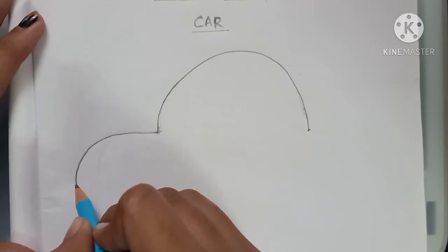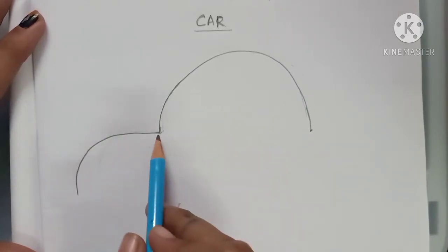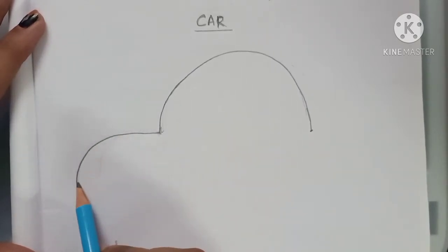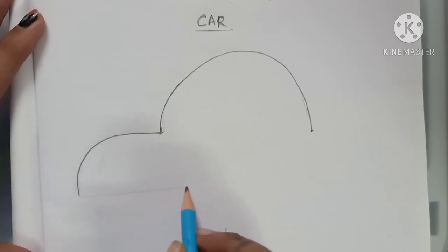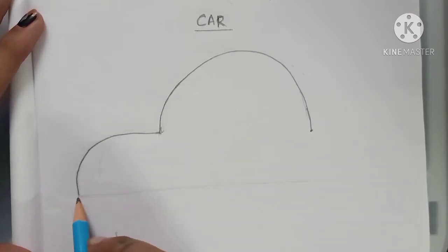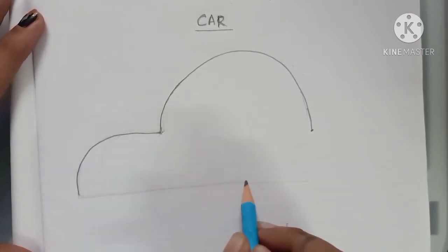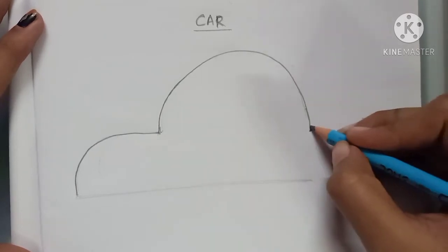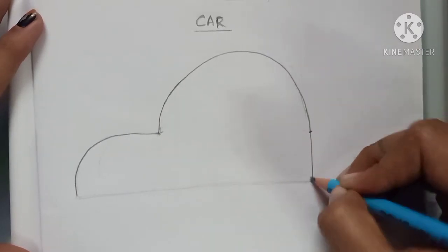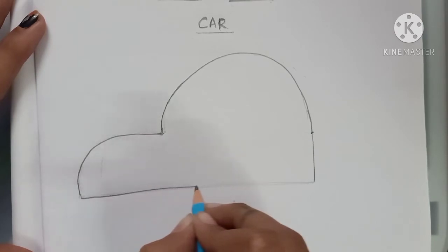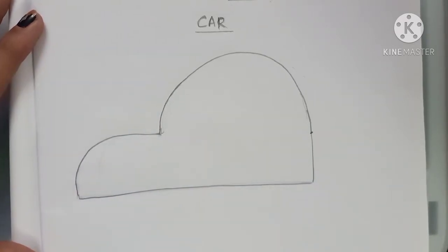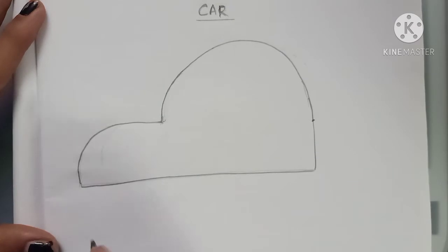Make a sleeping line and a curl. Make a sleeping line here and then join this with this line, then connect it. Now what you have to do, after that we are going to make two wheels.